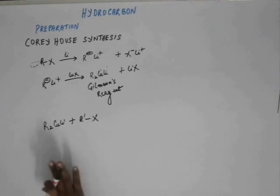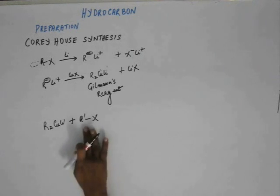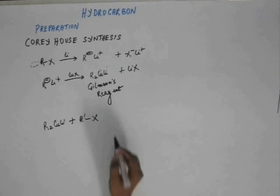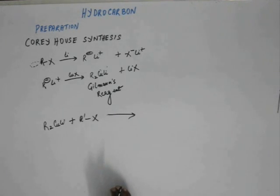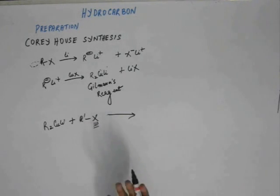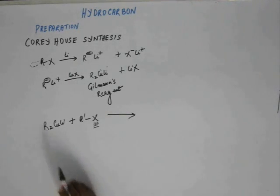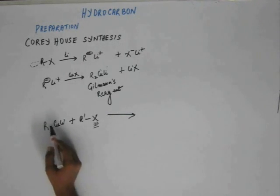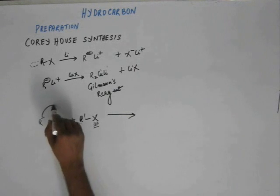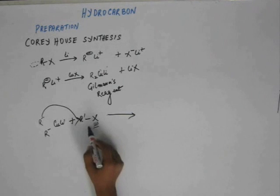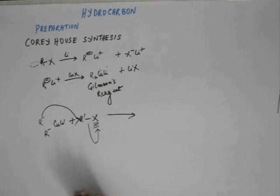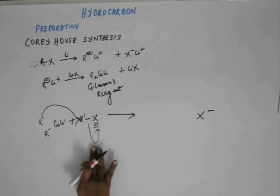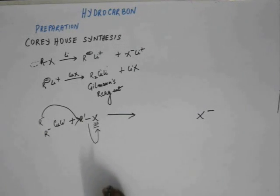After preparing Gilman's reagent, we add another alkyl halide. In alkyl halide there is a very good leaving group, and whenever you see an alkyl halide you get a feeling that there can be a substitution reaction. Here we have a nucleophile — R⁻ — with a negative charge on carbon. If we separate out the two R⁻ groups, one R⁻ will attack R'X from the backside, and X will take away its electrons and come out as X⁻.